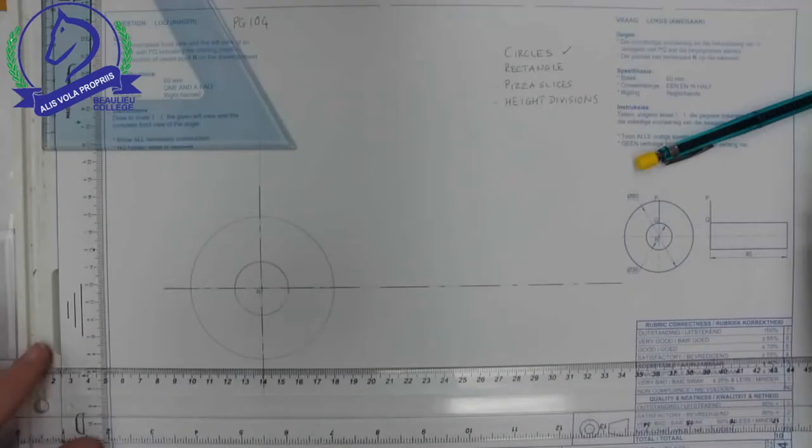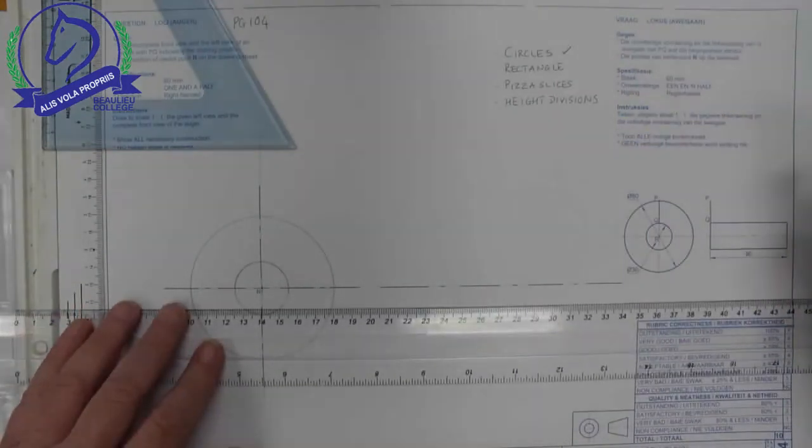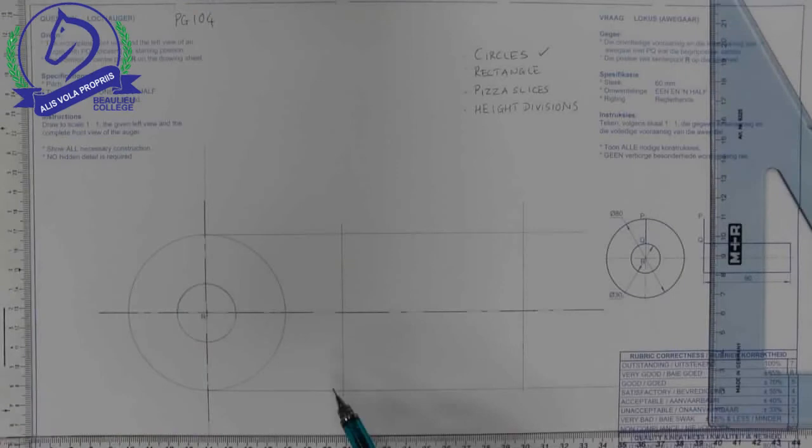So we're going to take our outside edges across and mark off the length of 90. There I've marked off my length of 90 and I've got my center line going through there.